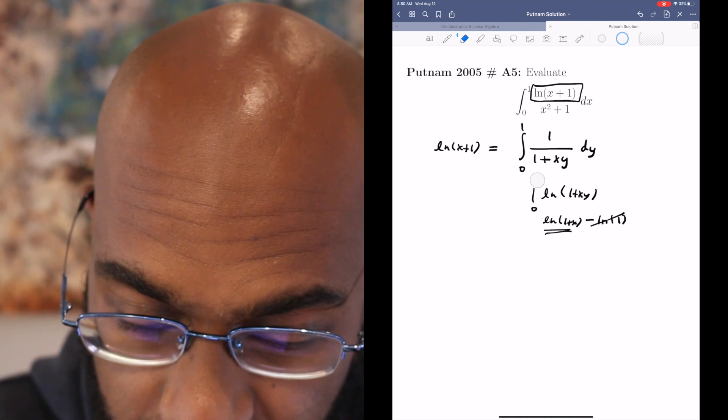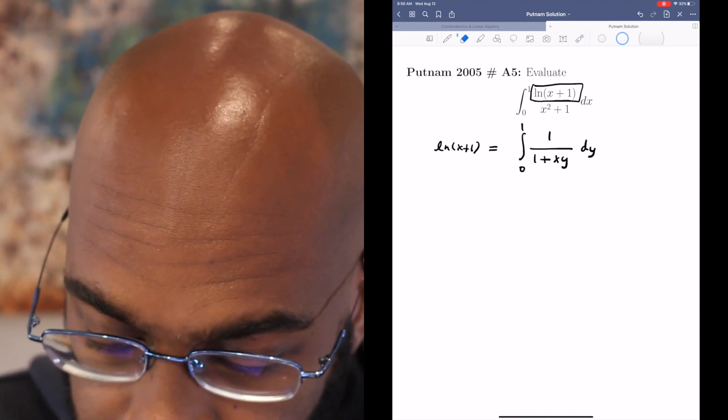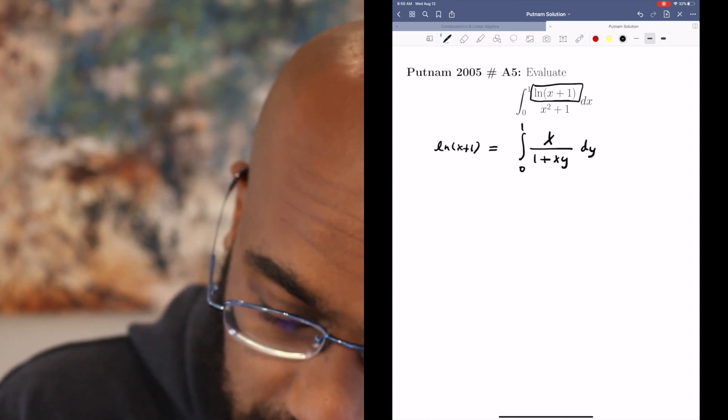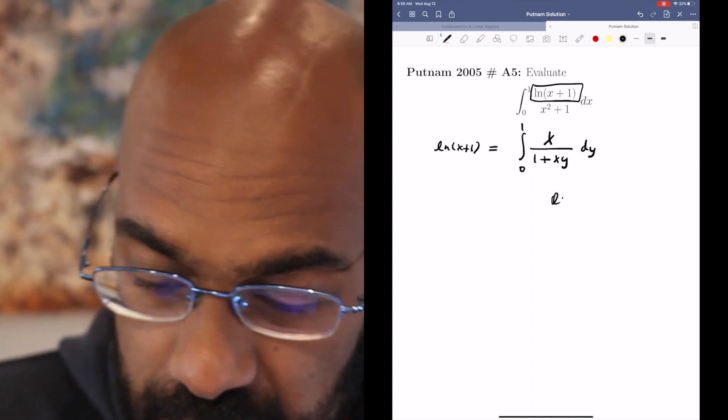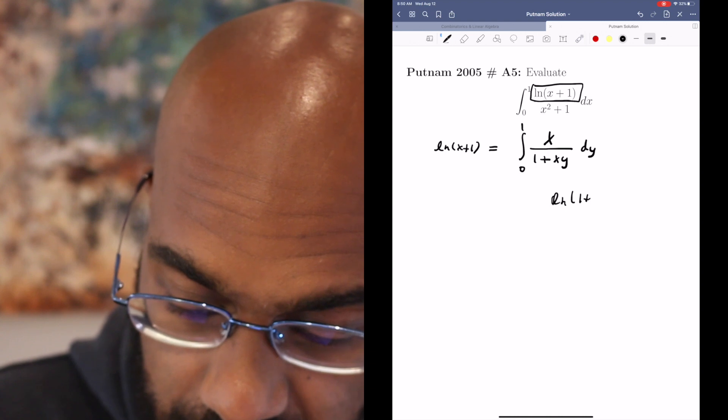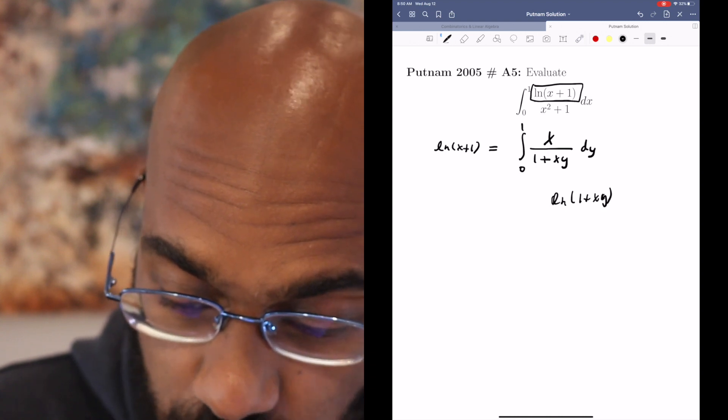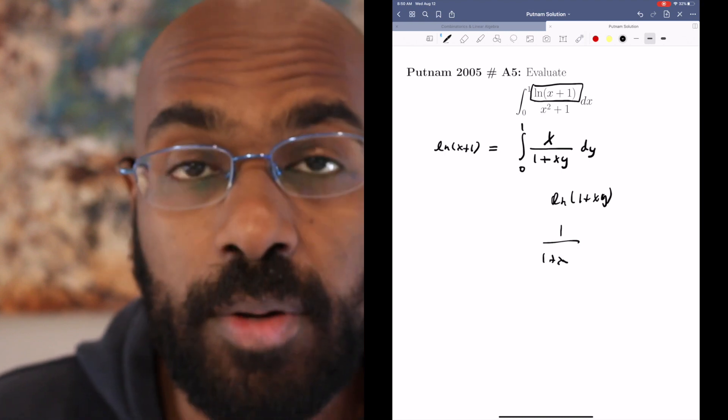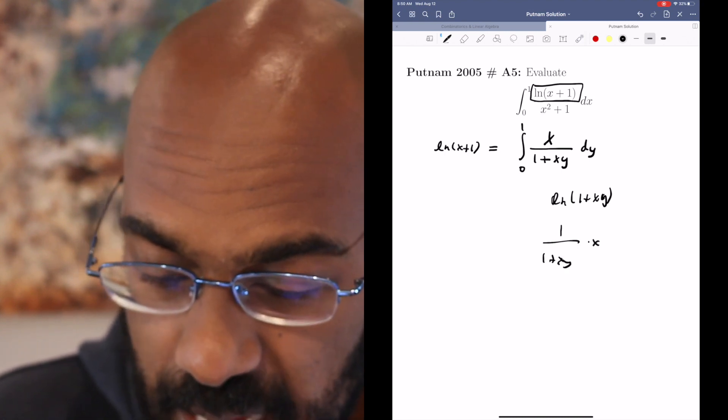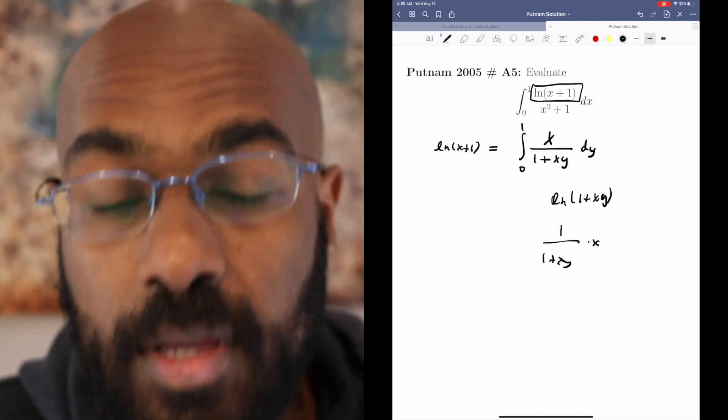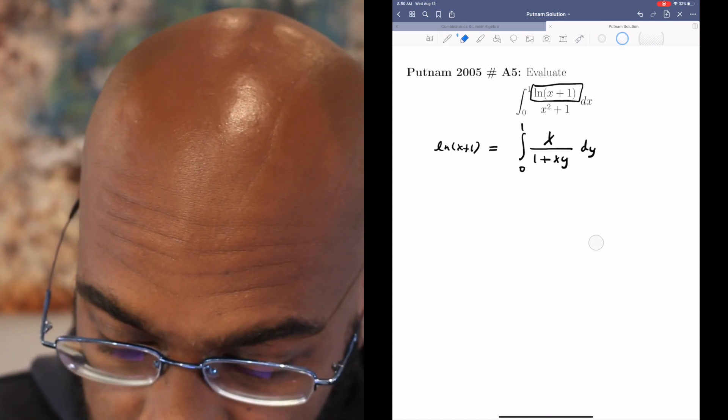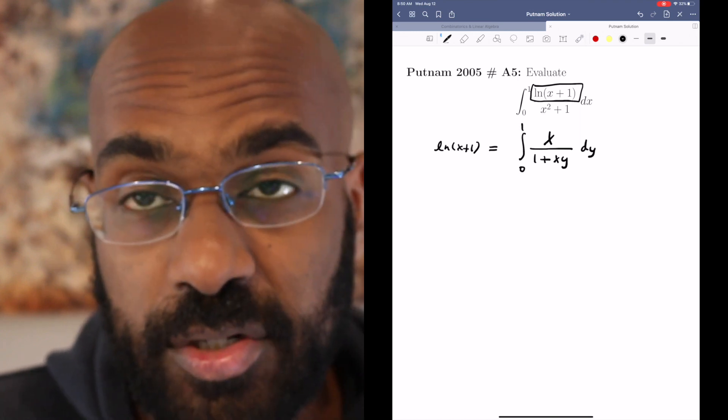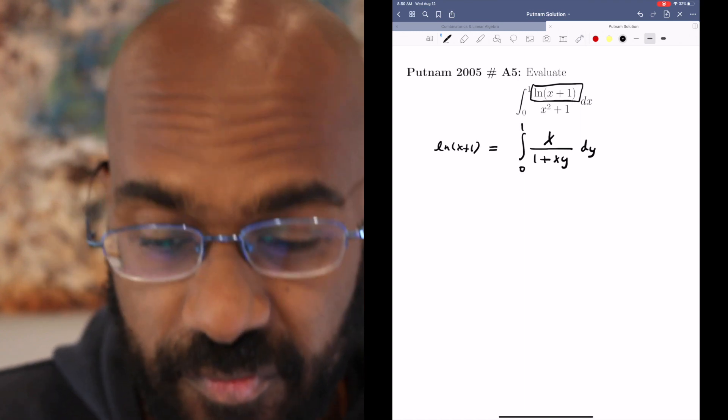The only thing we have to be careful of here is that there's a chain rule going on. So we have to multiply the numerator by x because the derivative of ln of 1 plus xy with respect to y, treating x as a constant, is 1 over 1 plus xy times x.